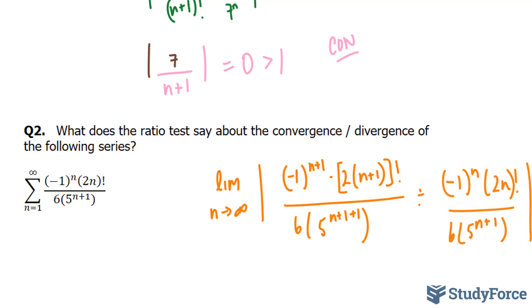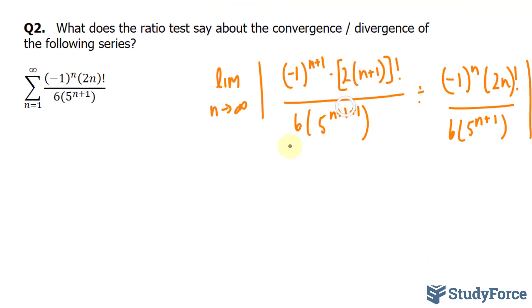Now, let's clean this up as best as we can. This part right here can become 5 to the power of n plus 2. Also, we have two fractions that are being divided, so I can change this to multiplication and flip this.